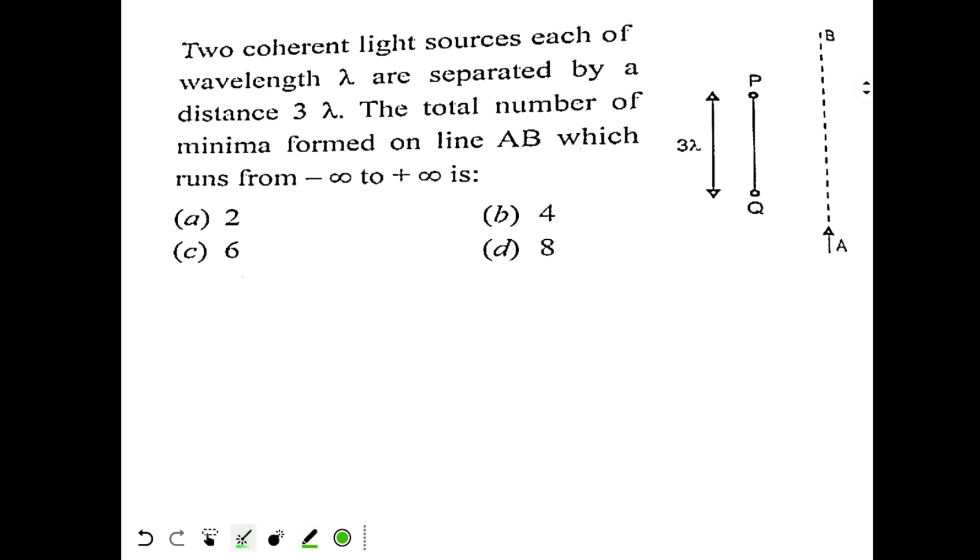Okay, see this question. We have two coherent light sources, each of wavelength lambda, separated by a distance 3 lambda. These are the two sources separated by 3 lambda. The total number of minima formed on the line AB, which runs from minus infinity to plus infinity, so on this line we have to find the total number of minima possible.